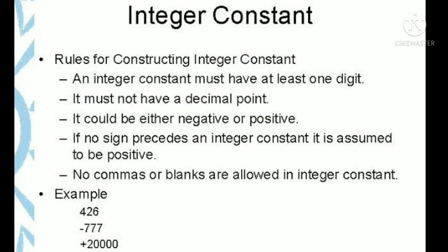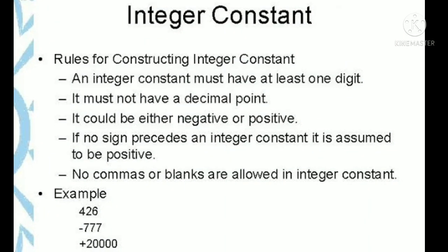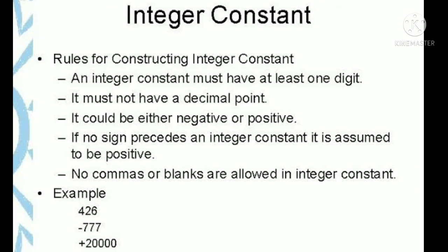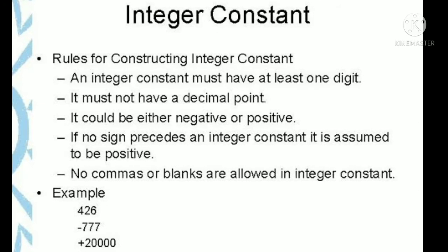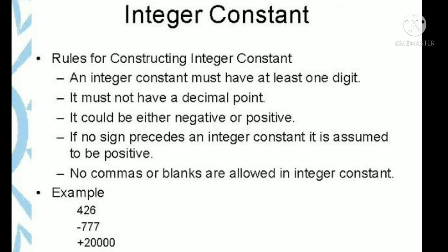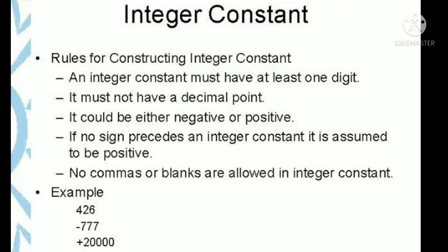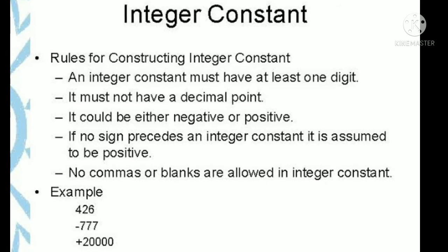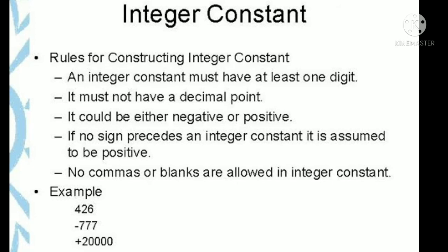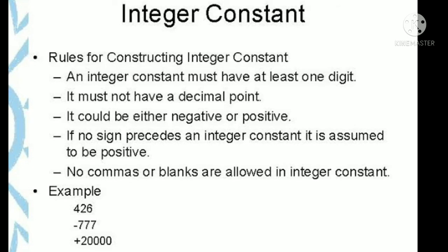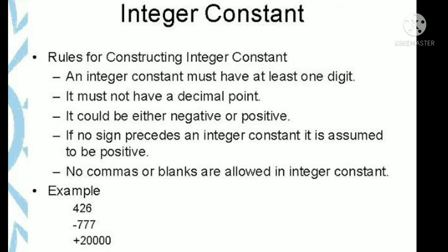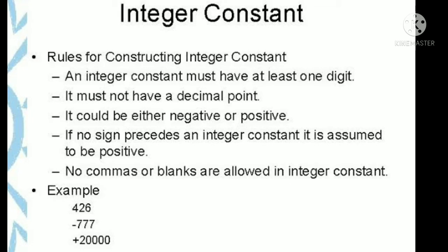Now we see rules for constructing integer constants. First, an integer constant must have at least one digit. Second, it must not have a decimal point. Third, it can be zero, positive, or negative.